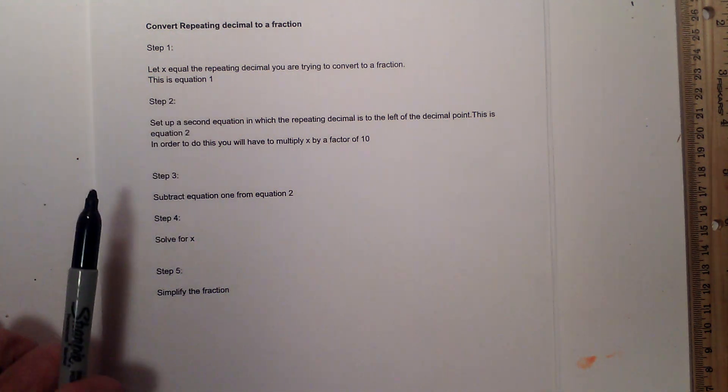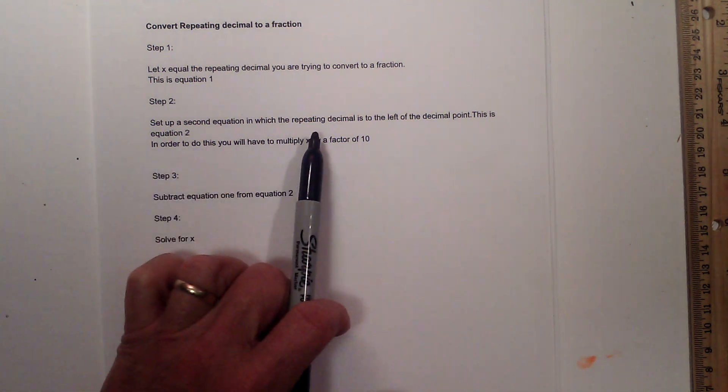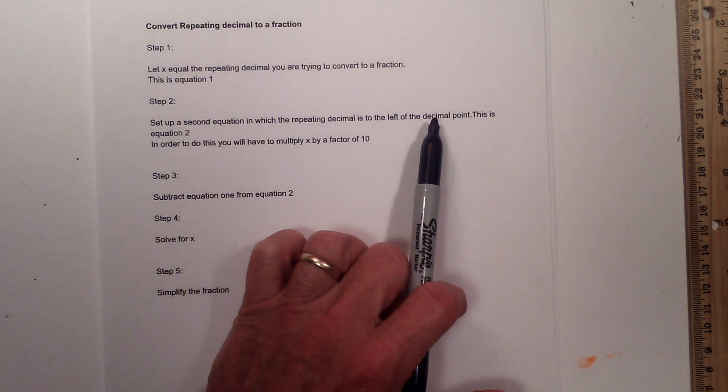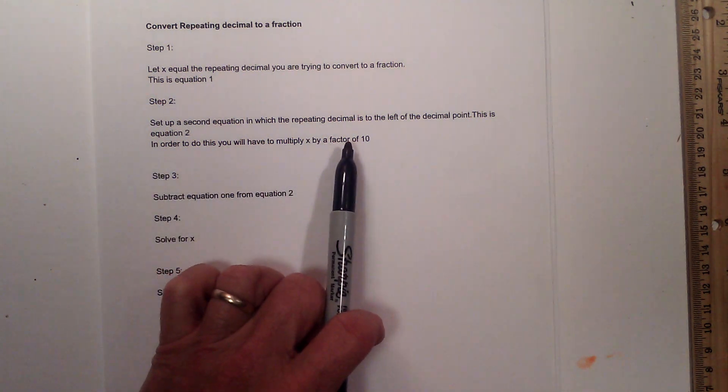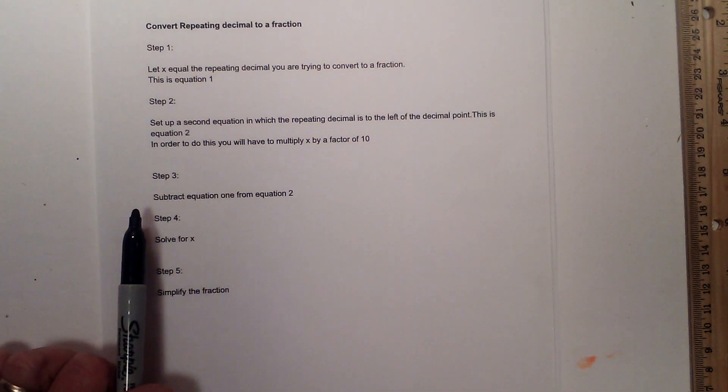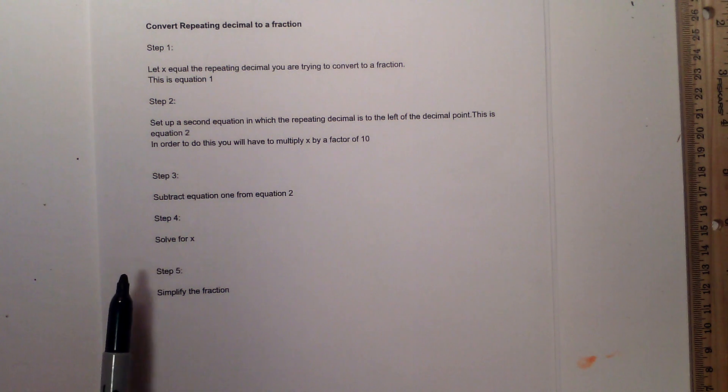Step 2 is you are going to set up a second equation in which the repeating decimal is to the left of the decimal point. In order to do this you may have to multiply by a factor of 10. Then you are going to subtract equation 1 from 2, solve for x, then simplify.